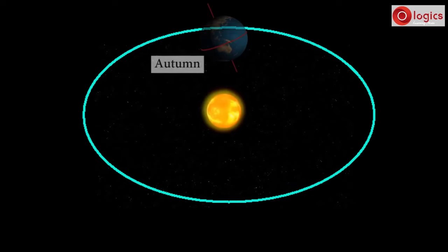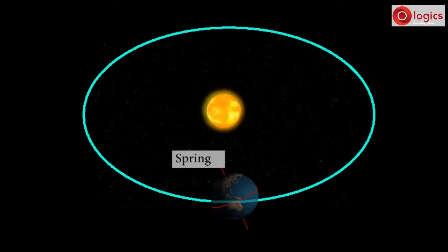Similarly, we have autumn when Earth orbits in this region. And when Earth orbits in this region, we have spring season.